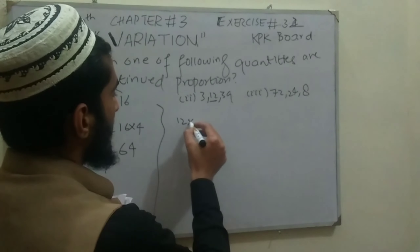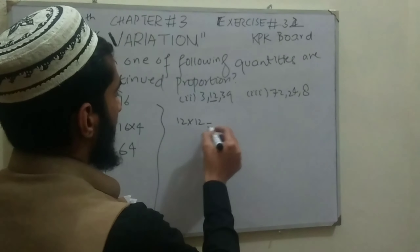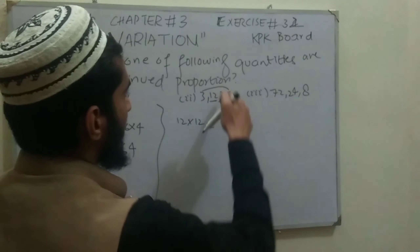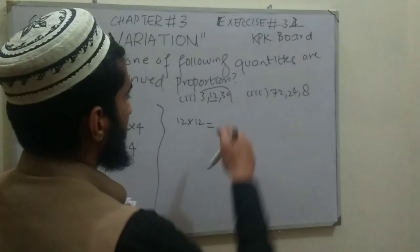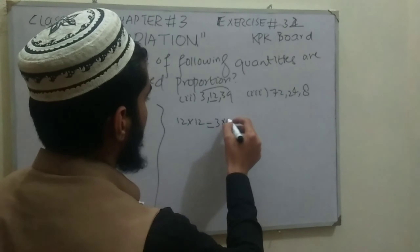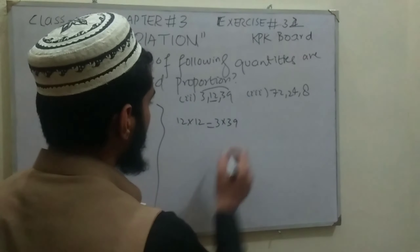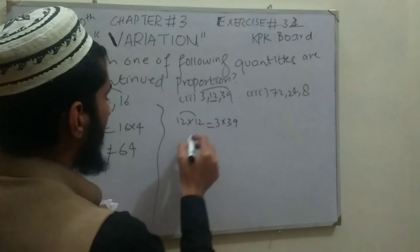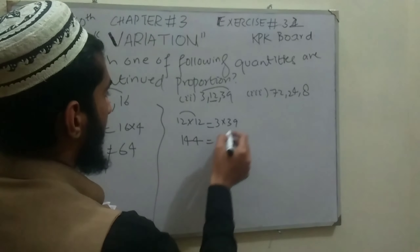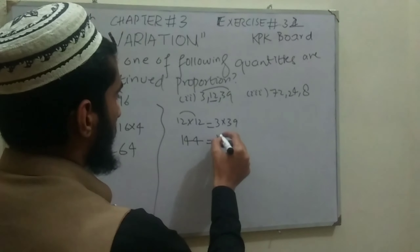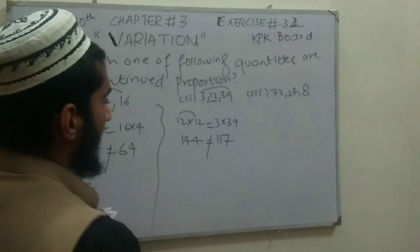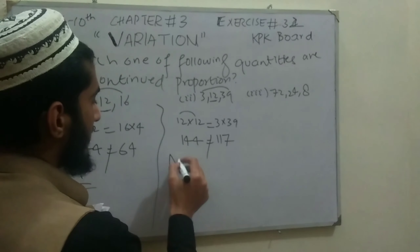Checking Part 2 using the same property: multiplying the middle number 12 by itself gives 144, and multiplying the extremes 3 and 39 gives 117. Since 144 ≠ 117, the two sides are not equal, so 3, 12, and 39 are not in continued proportion.